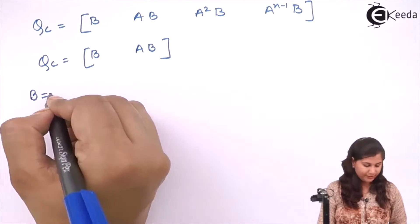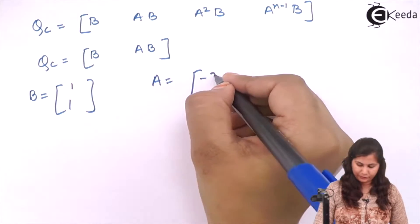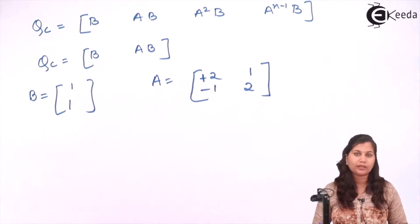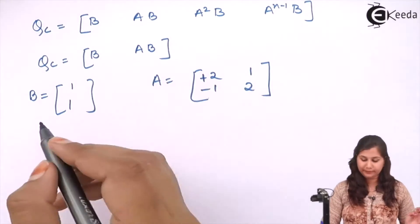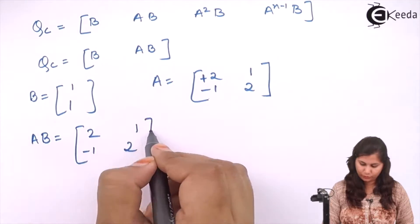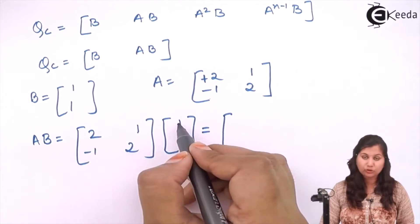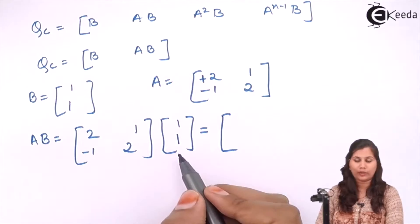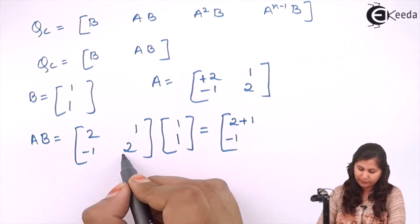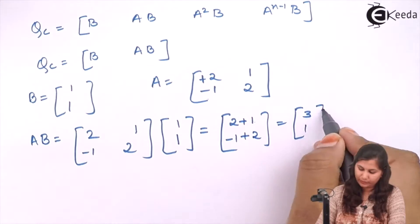B matrix is given as [1; 1]. The A matrix is [2, 1; -1, 2]. So we will calculate AB: [2, 1; -1, 2] multiplied with [1; 1]. This gives 2×1 + 1×1 = 3, and -1×1 + 2×1 = 1. So AB = [3; 1].